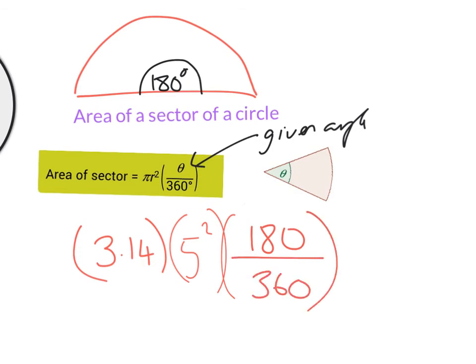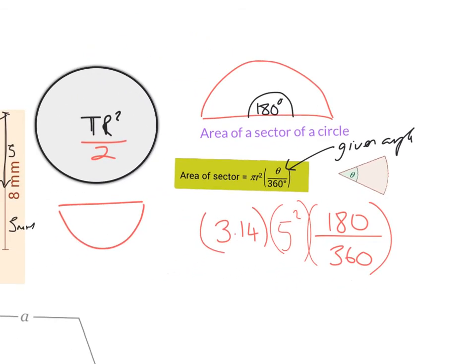Just super important to remember that a sector doesn't necessarily always have to look like this. It can look like a semicircle, or it can look like three quarters of a circle. So just make that connection. If it's easier for you to do this, by all means work away. I'm just showing you another way that might come in handy in a while. I've typed it all into my calculator, and my answer is 39.25 millimeters squared.